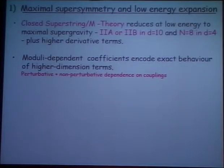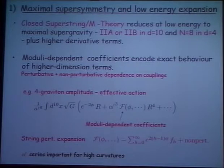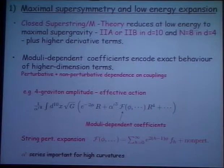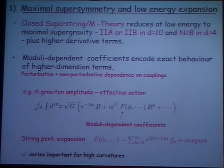So let me begin with the first part. The low-energy expansion of string theory, as we all know, is an alpha-prime expansion in which the successive terms have higher derivatives. The kinds of terms one gets, for example, are corrections to the Einstein-Hilbert term in the type 2b case, or the type 2 theories — R to the fourth — with a coefficient which is a function of the moduli, and that coefficient encodes both the perturbative and non-perturbative terms that you would get from string theory calculations.